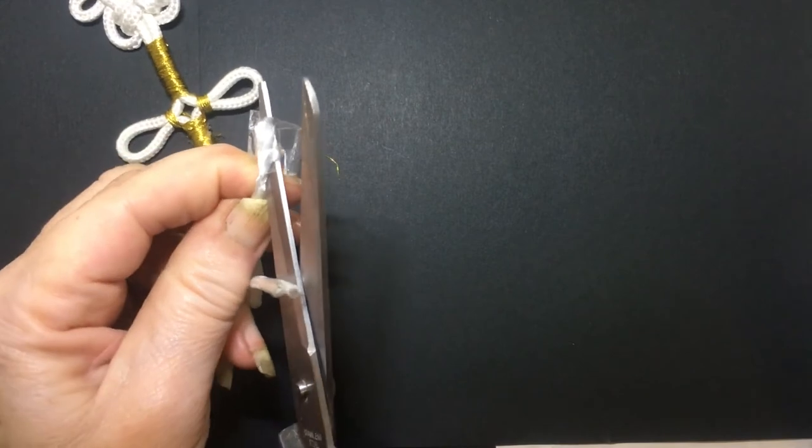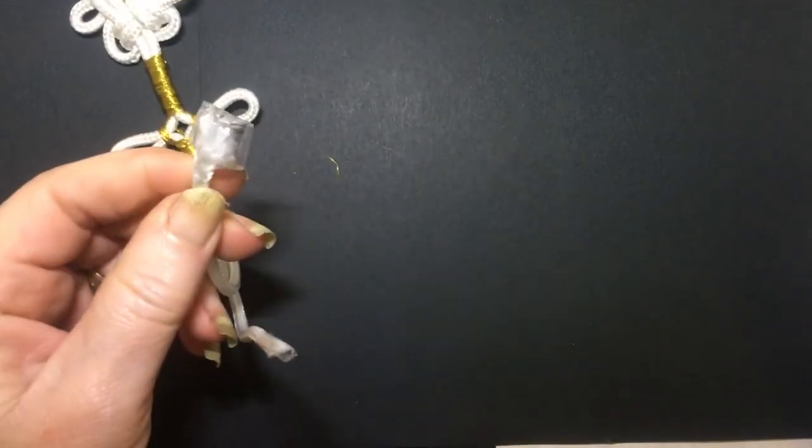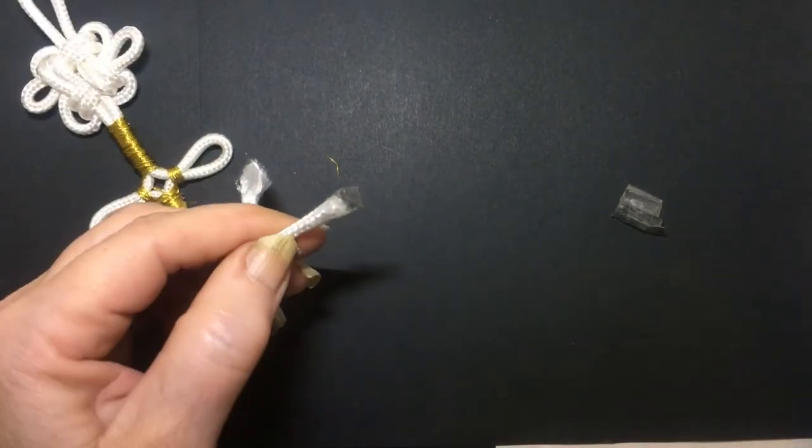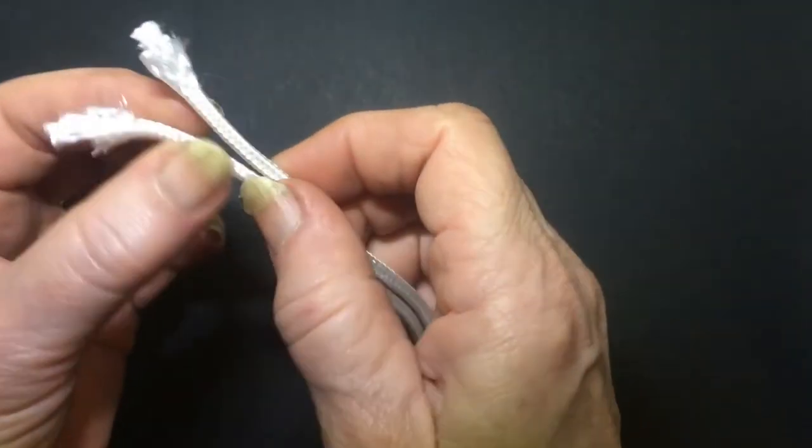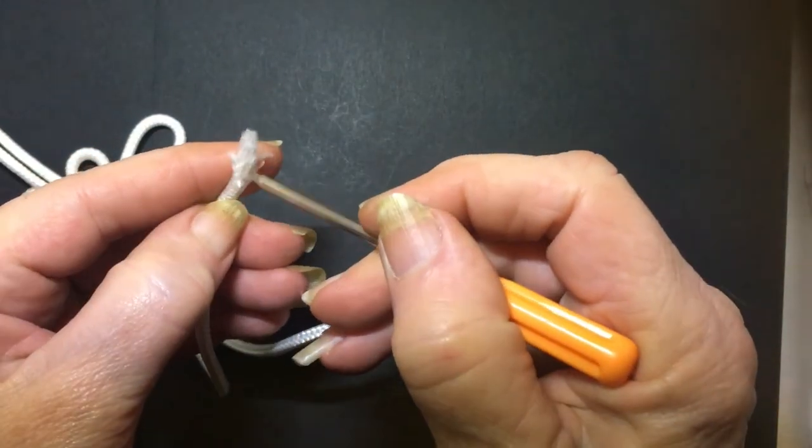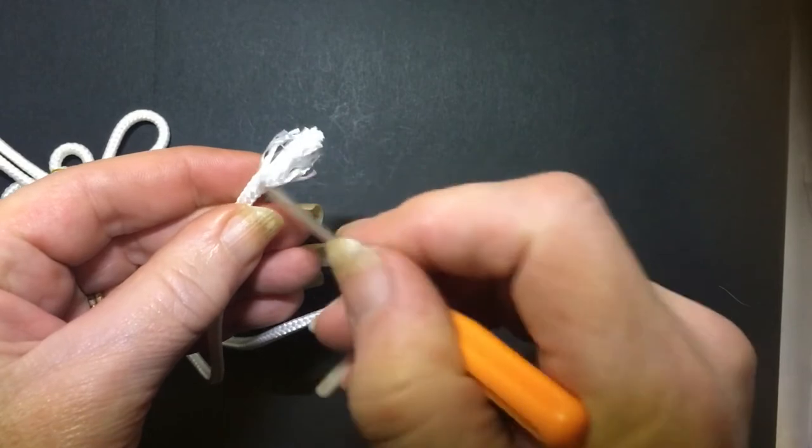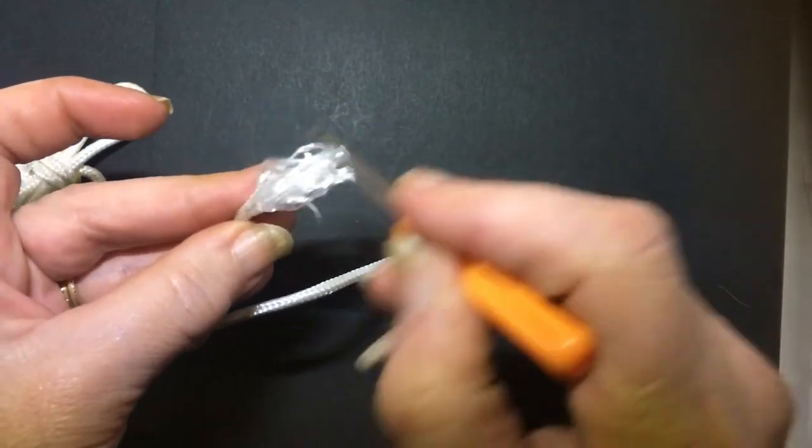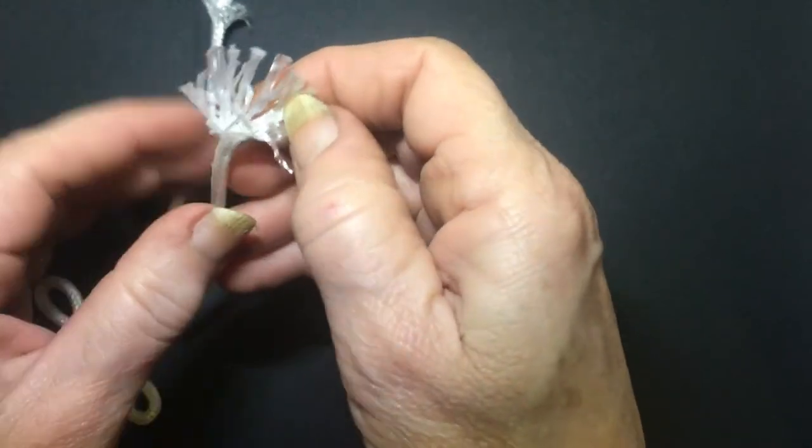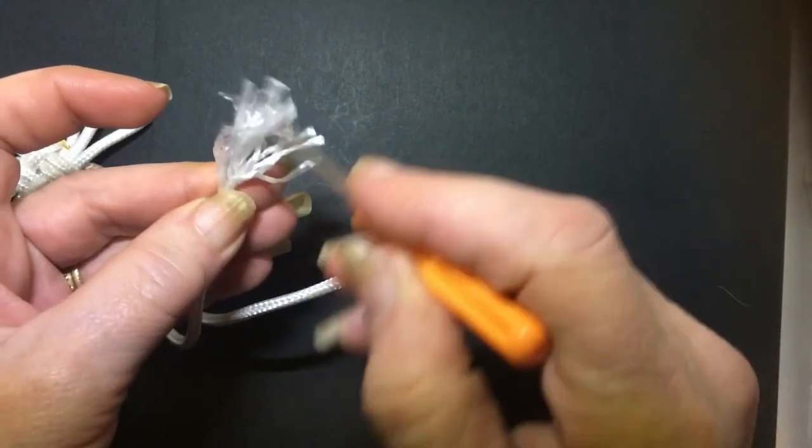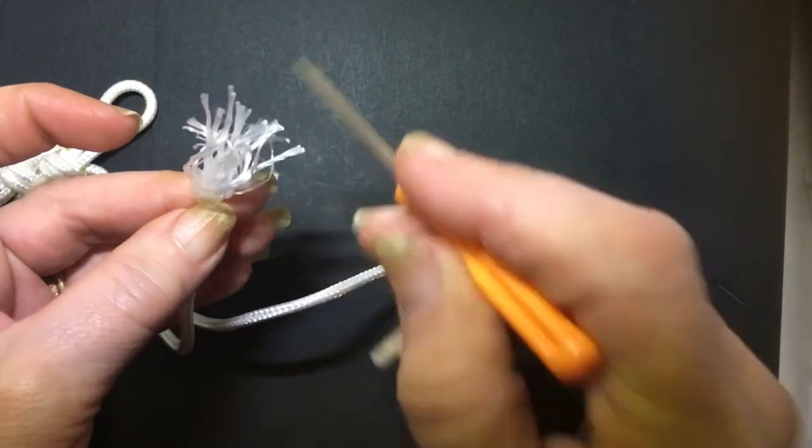Now take the end tape off on both the tassels. And then what we're going to do is tease them out. I'm just using a small little screwdriver, which works quite well to just tease it all out like that. You can take a fine tooth comb and comb it out as well. And then just do both sides.